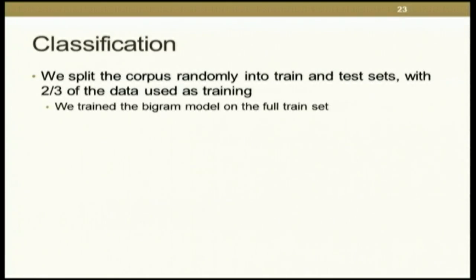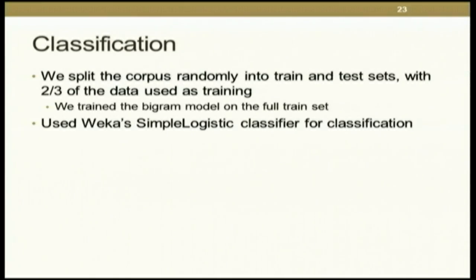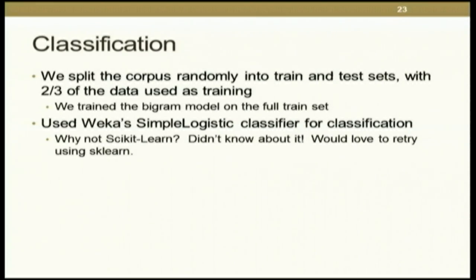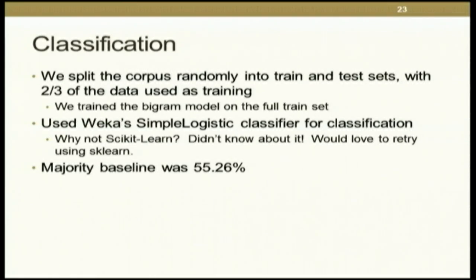We split the corpus randomly into train and test sets with two-thirds used as training, and trained the bigram model on the full train set. For machine learning, we used Weka's simple logistic classifier. Why not scikit-learn? Great question - I didn't know about it when I was doing this, so that's sheer ignorance on my part. It would be great to retry this using scikit-learn - it would have probably taken less time and required writing "attribute" far fewer times. Our majority baseline for this task was 55.26% because we had more sarcastic utterances than sincere utterances in the corpus.